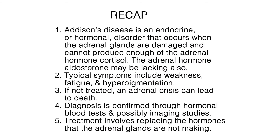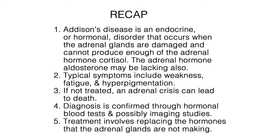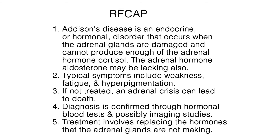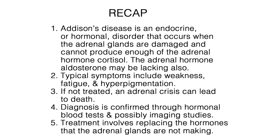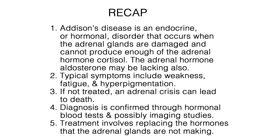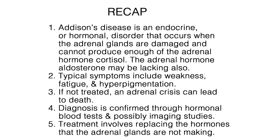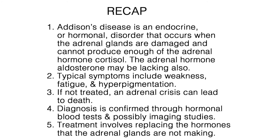In review, Addison's disease is an endocrine or hormonal disorder that occurs when the adrenal glands are damaged and cannot produce enough of the adrenal hormone cortisol, and the adrenal hormone aldosterone may be lacking also. Typical symptoms include weakness, fatigue, and hyperpigmentation, and if not treated, an adrenal crisis can lead to death. Diagnosis is confirmed through hormonal blood tests and possibly imaging studies, and treatment involves replacing the hormones that the adrenal glands are not making.